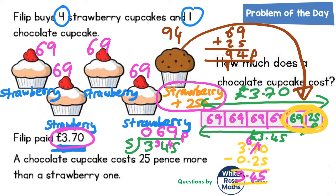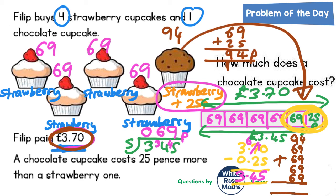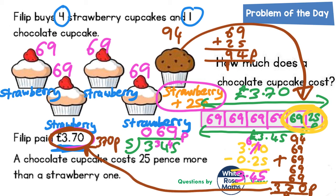Although we've technically finished — the question asks how much a chocolate cupcake costs, and the answer is 94p — it would be wise to double-check that the cost of the five cakes adds up to £3.70. That's 94p for the chocolate cake plus 69p, 69p, 69p, 69p for the four strawberry cakes. 4 nines are 36 plus 4 is 40 — put the zero in, carry the 4. 9 plus 6 is 15, plus 6 is 21, plus 6 is 27, plus 6 is 33, plus the 4 carried is 37. So that's 370p, which is £3.70. It all checks out. Every strawberry cake is 69p and the chocolate cake is 94p.